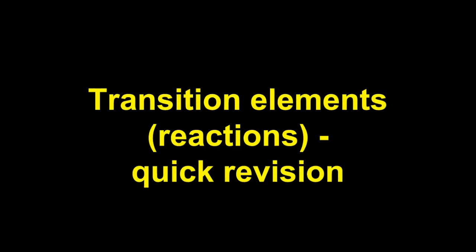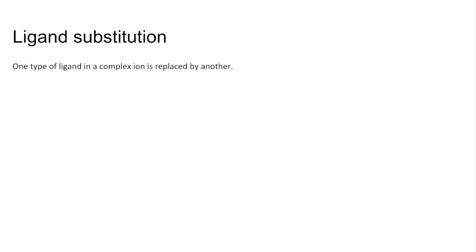A quick revision video on transition element reactions. We'll start with ligand substitution — that's where one type of ligand in a complex ion is replaced by another.